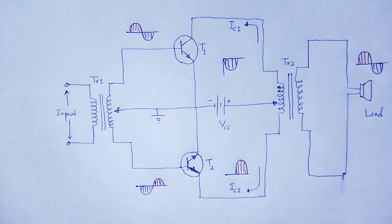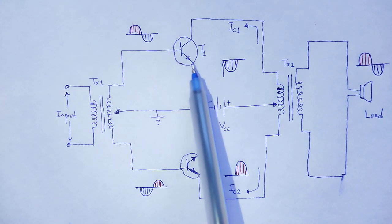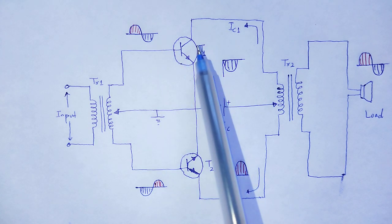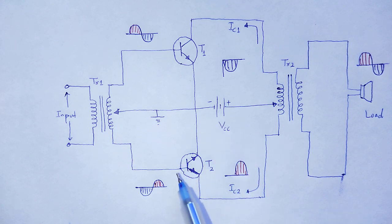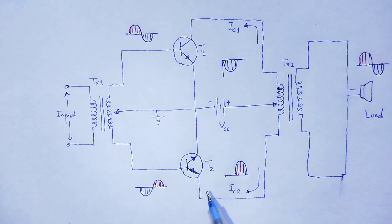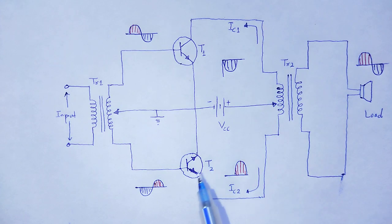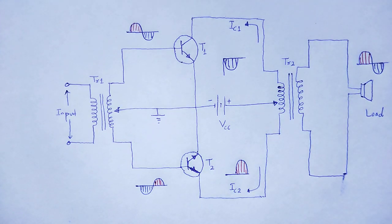That is the working of the class B push-pull amplifier. As it is called a push-pull amplifier, one transistor is used to increase the collector current — that is the pushing purpose — whereas another transistor is used to bring down that collector current — that is the pulling purpose. For that reason, this arrangement is called a push-pull amplifier.